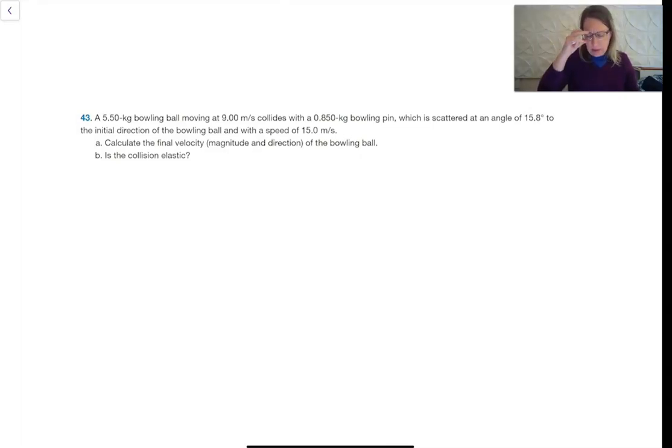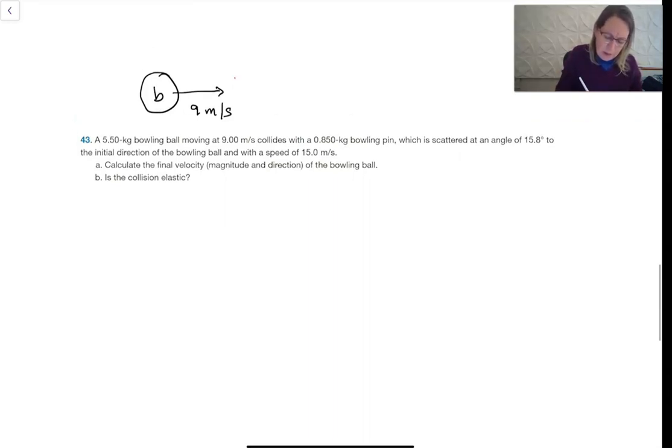All right, this is a slightly more complicated problem because we've got more than one dimension that we've got to worry about. We've got a bowling ball going at nine meters per second, so that's fairly big, and it's going to hit a bowling pin. This is a top view, obviously, from my drawing.